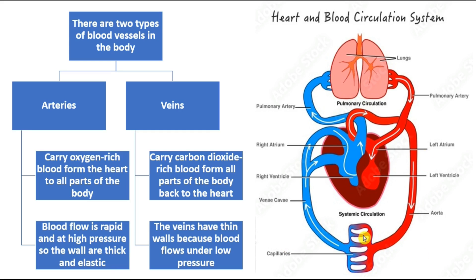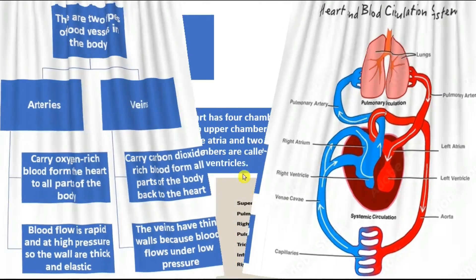Veins are completely opposite to arteries. They carry carbon dioxide-rich blood from all parts of the body back to the heart. Unlike arteries, veins have thin walls because blood in the veins flows under low pressure. So the heart pumps oxygen-rich blood to the organs via arteries, and the veins carry back the carbon dioxide-rich blood to the heart.